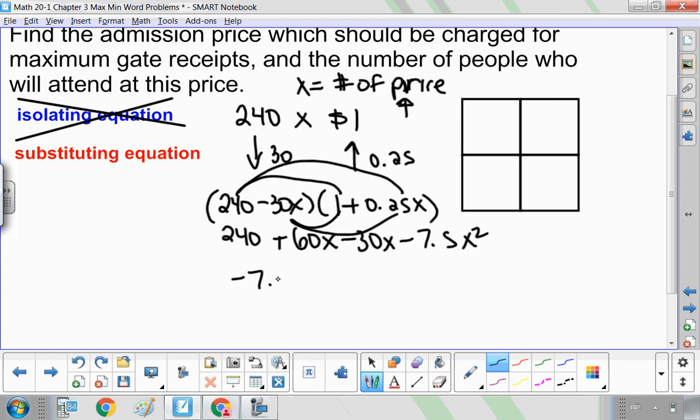So rearranging this, I have negative 7.5X squared, 60 take away 30 is 30X plus 240. So this is going to be my maximum gate receipts or profits.